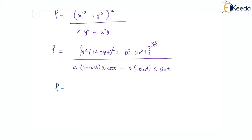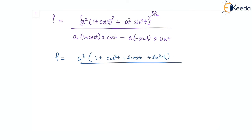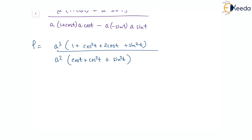Taking a squared outside means in the numerator we get a cubed overall. So rho equals a cubed times of: expanding 1 plus cos t whole squared gives 1 plus cos squared t plus 2 cos t plus sin squared t. In the denominator, a squared is again common: 1 plus cos t times cos t, giving cos t plus cos squared t, plus sin squared t.